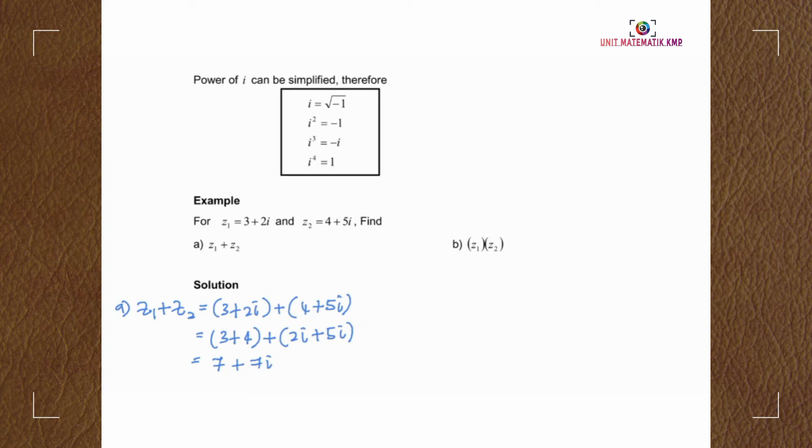z1 times z2 as 3 plus 2i times 4 plus 5i. We expand the multiplication of binomial.